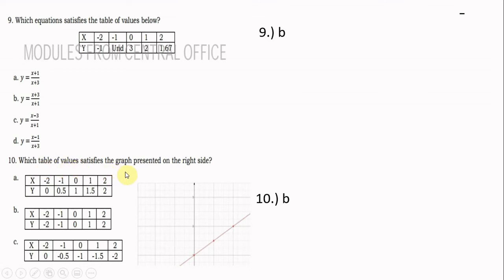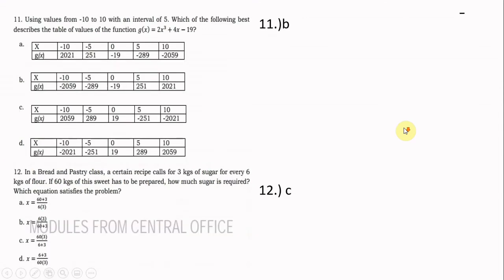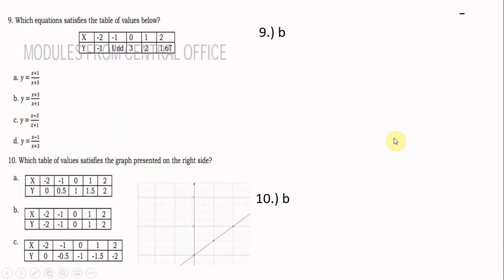Number 10: which table of values satisfies the graph shown? This is a linear function graph, and the line passes through the origin at coordinate (0, 0). Therefore, when x = 0, y = 0. The answer is letter B, which shows x = 0 giving y = 0.